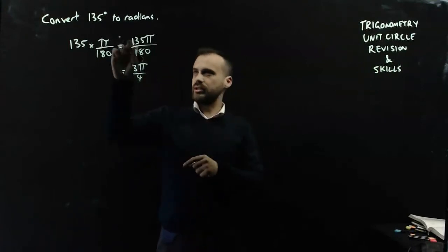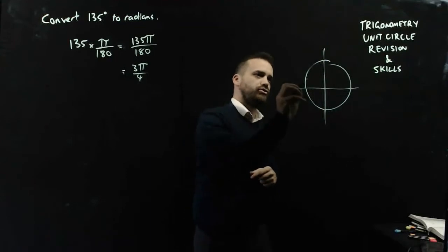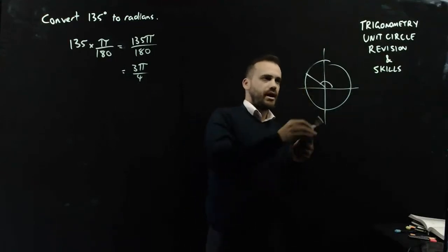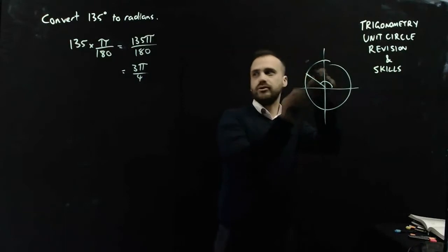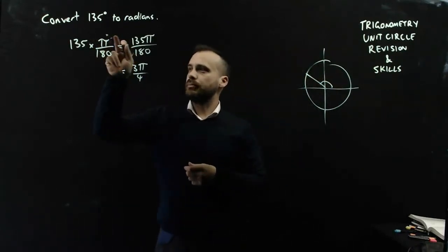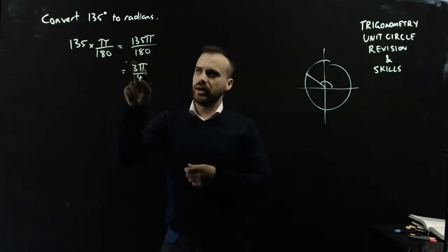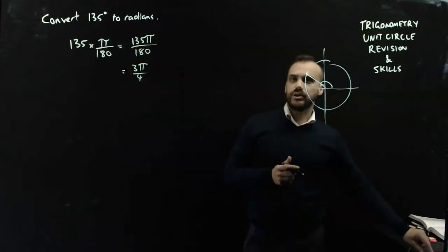Now, how did I know that? I didn't actually simplify that fraction. I thought about my unit circle. I drew 135 degrees on there, and it's π on 4, 2π on 4, 3π on 4. But multiplying by π on 180 and simplifying your fraction will also get you there as well.